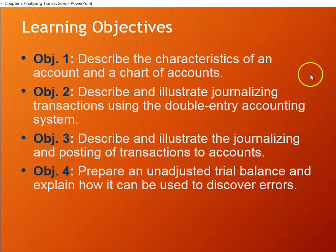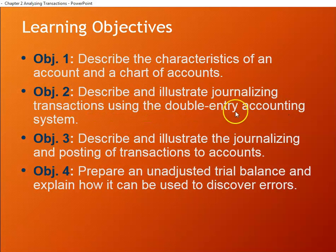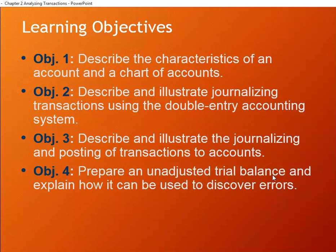We have some learning objectives here. We're going to describe the characteristics of an account, which we've kind of already done, and talk about the Chart of Accounts. We're going to describe and illustrate journalizing transactions using the Double Entry Accounting System. We actually did a little bit of this using layman's terms in Chapter 1. Now we're going to get into debits and credits. We'll also cover posting transactions to accounts, and then prepare an unadjusted trial balance and talk about some related errors. Just do pay close attention and try to stay with me.